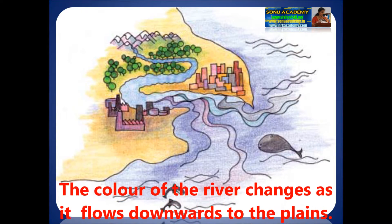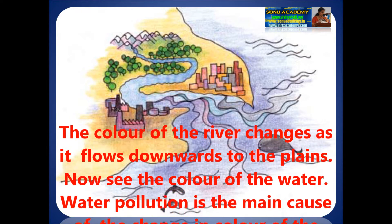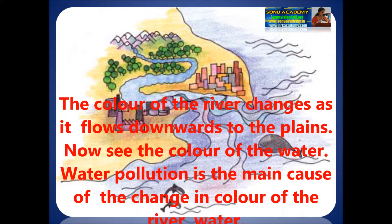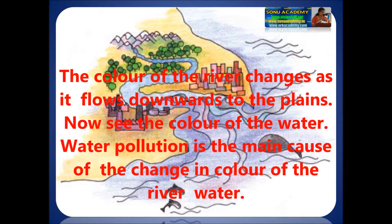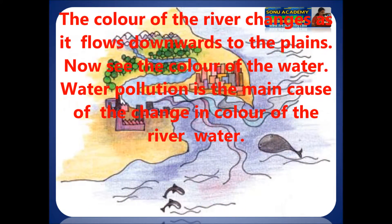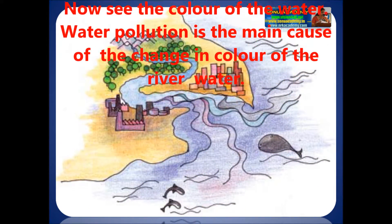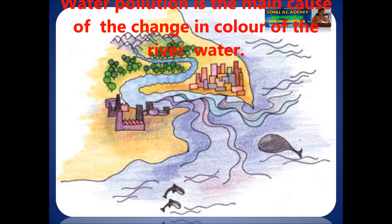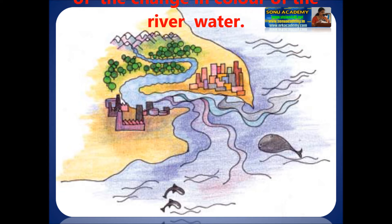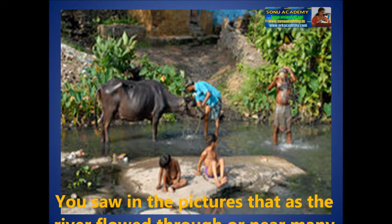The color of the river water changes as it flows downwards to the plains. Now you see the color of the water. Water pollution is the main cause of change in color of river water. How does the water become dirty?